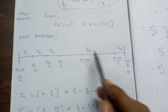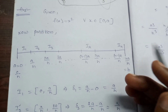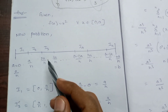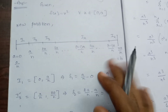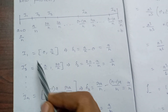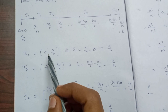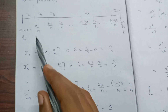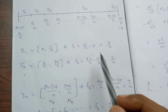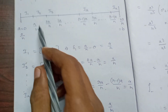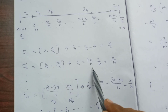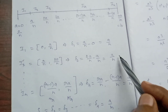We define subintervals I₁, I₂, I₃, ..., Iₙ. The first subinterval I₁ is the closed interval [0, a/n], so Δ₁ = a/n − 0 = a/n. The second subinterval I₂ goes from a/n to 2a/n, so Δ₂ = a/n.